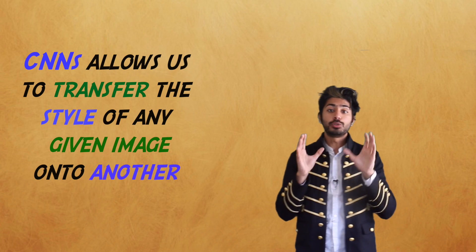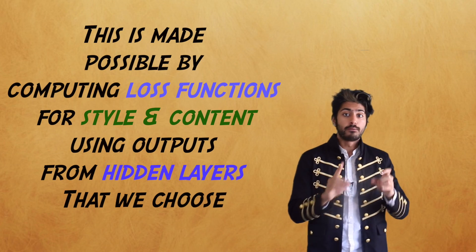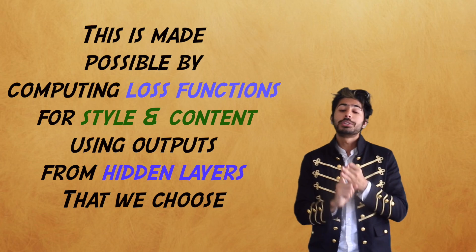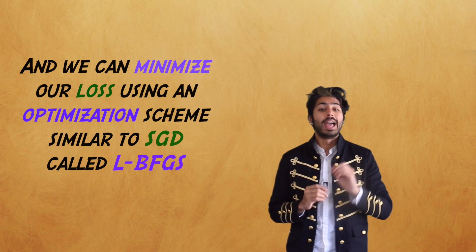So, to break it down, convolutional neural nets allow us to transfer the style of any given image onto another. To do this, we'll compute loss functions for style and content using outputs from hidden layers we choose. And we can minimize our loss using an optimization scheme similar to stochastic gradient descent called LBFGS.